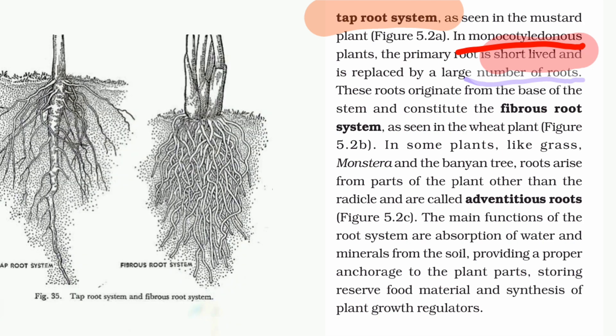In monocot plants, this primary root is short-lived and disintegrates. Large lateral roots then originate from the base of the stem, forming what is called the fibrous root system.